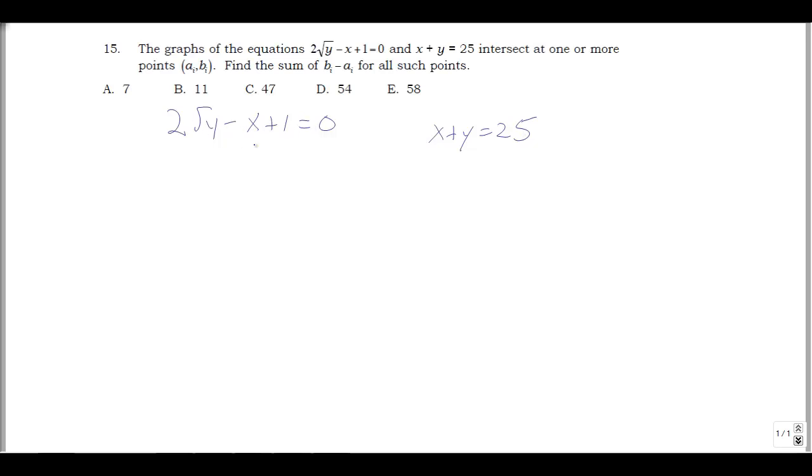So here I'm going to solve for y. I get 2√y equals, I'll move the negative x to the other side as positive x, 1 to the other side as minus 1. Then I'm going to get √y is (x-1)/2, and this gives me y = ((x-1)/2)².